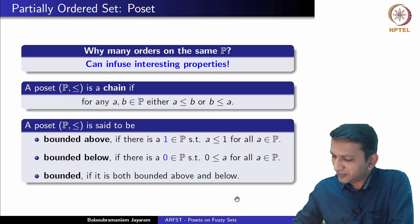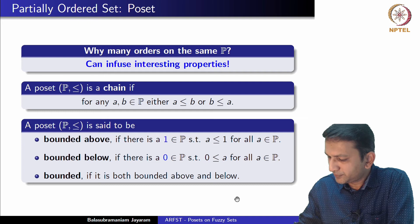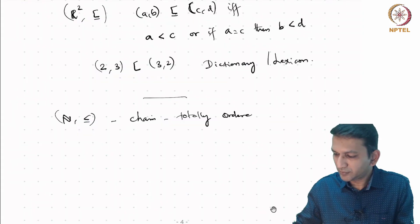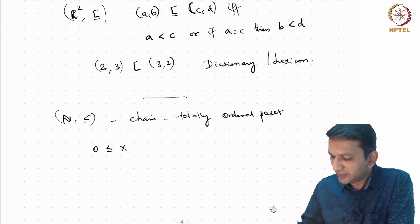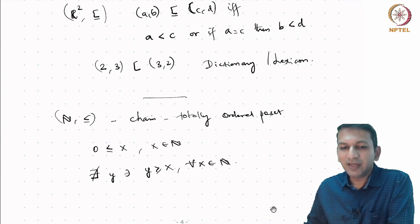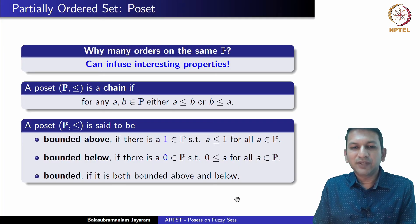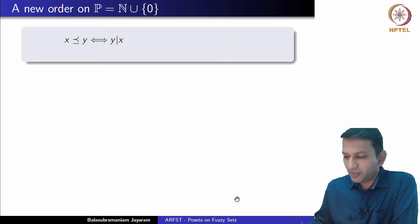Consider the set N with the usual order. While this is a chain or totally ordered poset, we know it is not bounded above. Yes, 0 is smaller than any x, so it is bounded below. But there does not exist any y such that y is greater than every x in N. Clearly, this is not a bounded poset. Now let us see whether we can introduce a new order on this set.